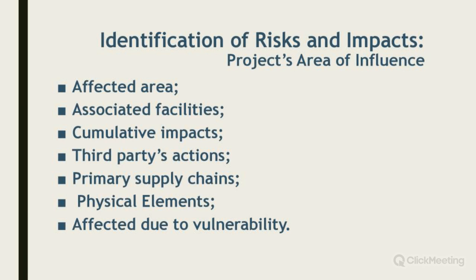The risk and impact identification process should also consider gas emissions. Regarding the project area of influence, associated facilities are usually facilities that are not funded as part of the project. Such facilities would not have been constructed or expanded if the project did not exist, and without which the project would not be viable — such as a railway line or road construction associated with the facility.